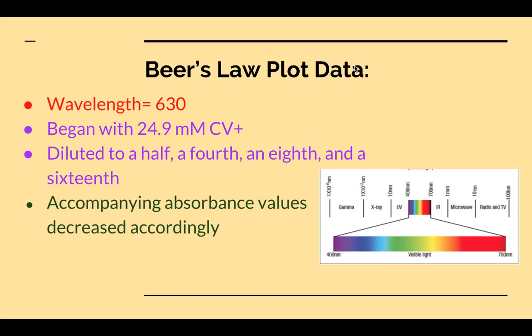The Beer's Law plot data and the components that went into it. First of all, we selected 630 nanometers as our wavelength. In a previous lab, we had a copper nitrate solution that was a deep blue. Whatever value we chose, we knew that had to be closer to the 700 nanometer side of the spectrum, because those colors oppose the blues and the violets, and that would allow for optimum absorption.